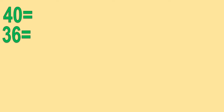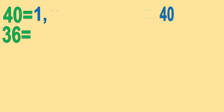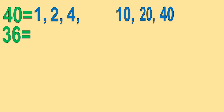First, list all the factors of 40. We have 1 times 40, 2 times 20, 4 times 10, and 5 times 8.